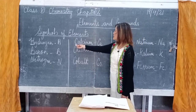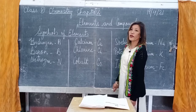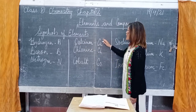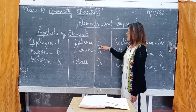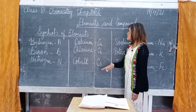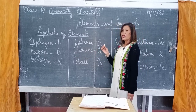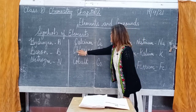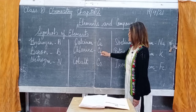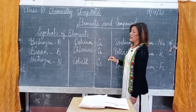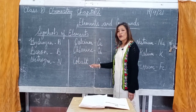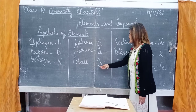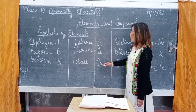For calcium, take the first letter C and the second letter A, giving the symbol Ca. For chlorine, the first letter is again C, and the second letter is L, so the symbol is Cl. For cobalt, the first letter is C and the second letter is O, giving the symbol Co.